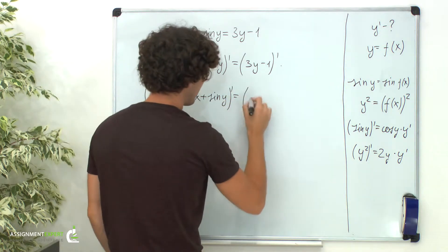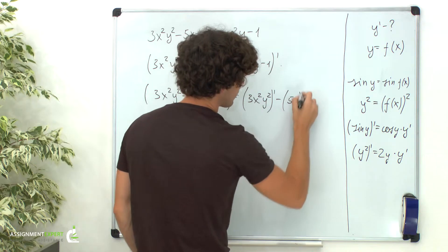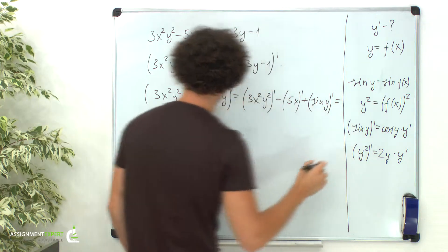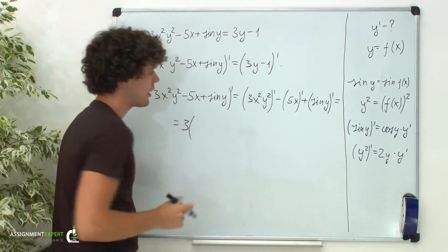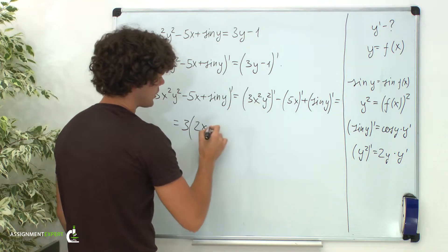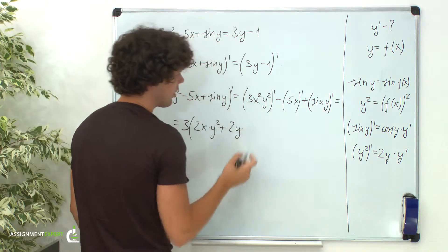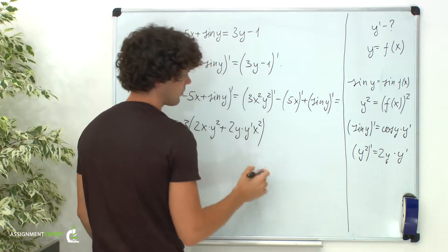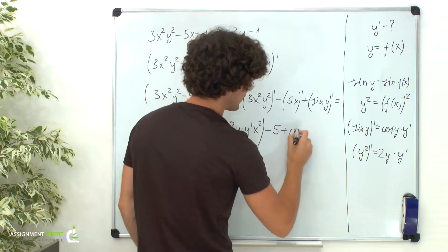It is equal to the derivative of 3x squared times y squared, minus the derivative of 5x, plus the derivative of sine of y which gives cosine of y times y prime. In the first addend we have a product. Let's factor out 3 and apply the product rule: x squared prime gives us 2x times y squared, plus y squared prime times x squared, which is 2y times y prime times x squared. The second term gives us just 5.